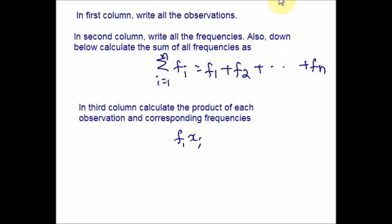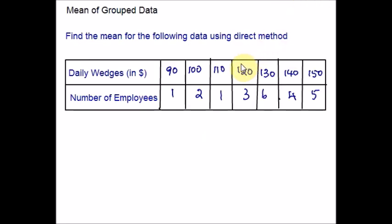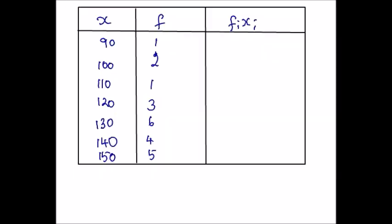Now let me take an example and explain step by step. Here is an example where we are asked to use the direct method — a table is given. Let us first construct the table with 3 columns. In the first column I am going to enter the x values, which are the daily wages. In the second column I am going to enter the frequencies, that is the number of employees. And in the third column I am going to multiply the frequency with the corresponding x values. I have noted down all the given information as x and f.